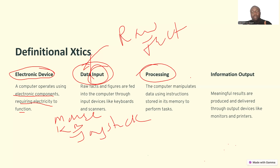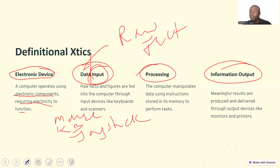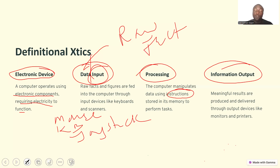The reason you manipulate data is so that you can get information. Information is the meaningful results produced or delivered through output devices. For you to get the desired output, the processing needs to be carried out using a set of instructions stored in the computer memory. This set of instructions is basically called software.